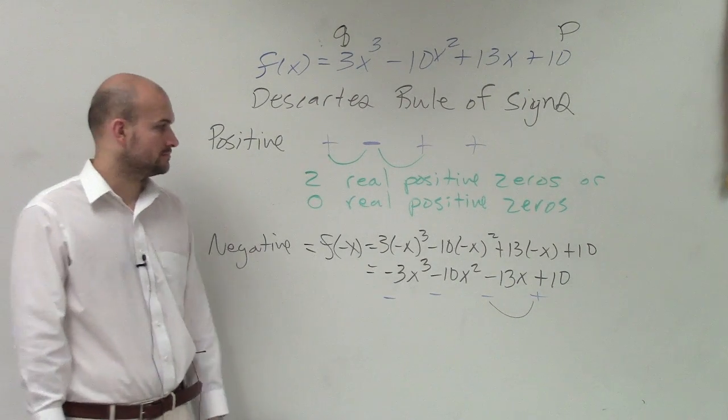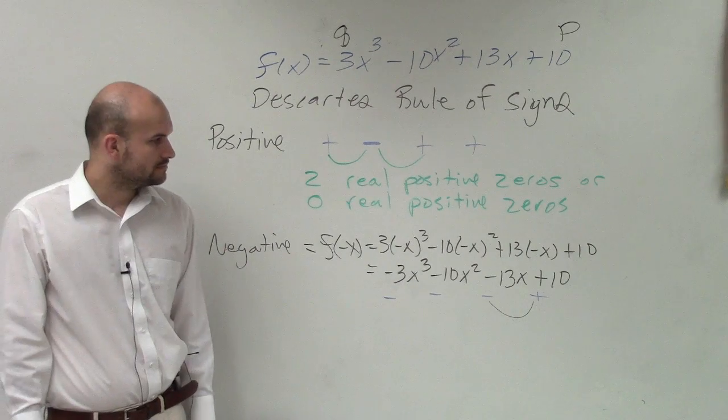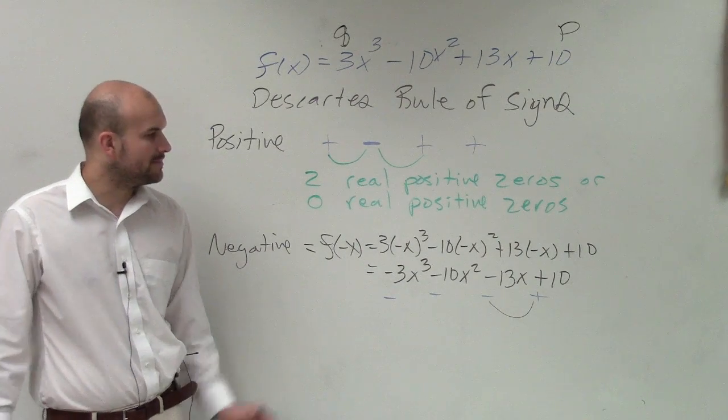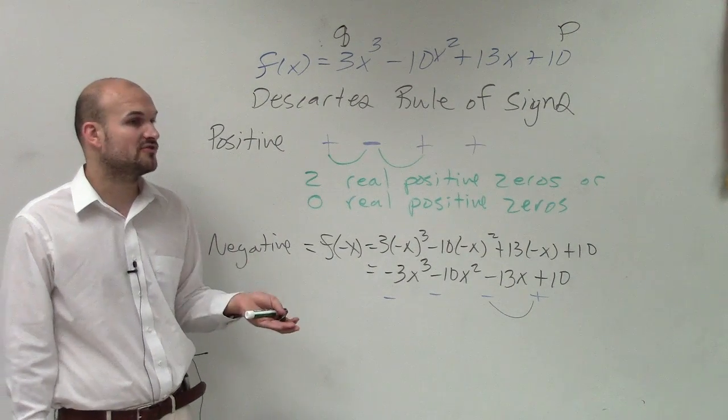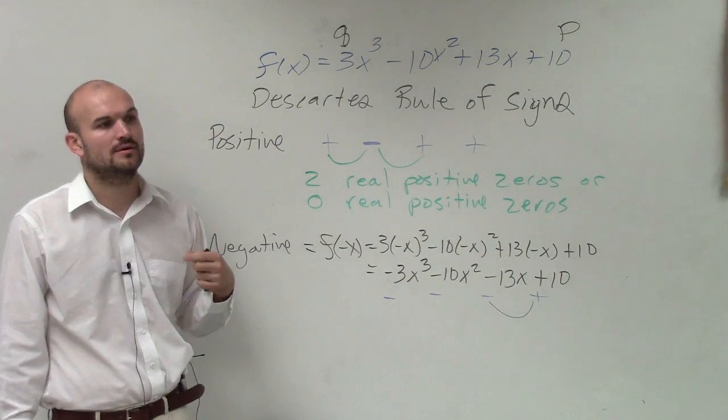Wouldn't that be less than x²? Remember when you're doing negative, you have to follow the rules of order of operations. You square the number first, then you multiply.